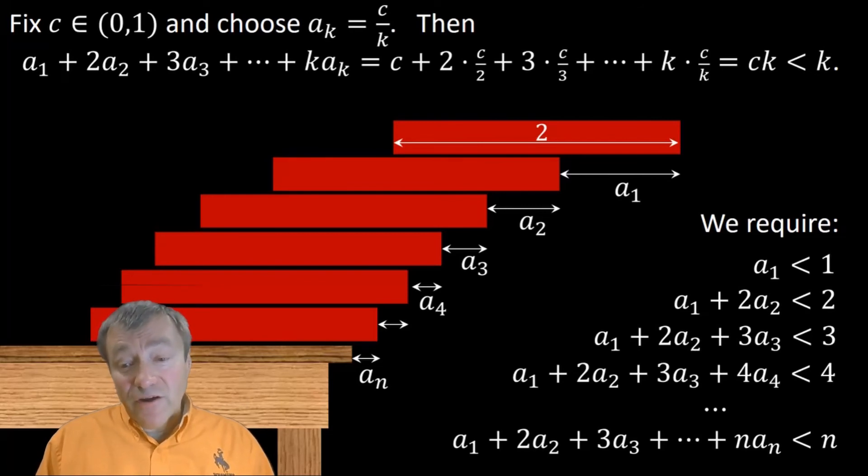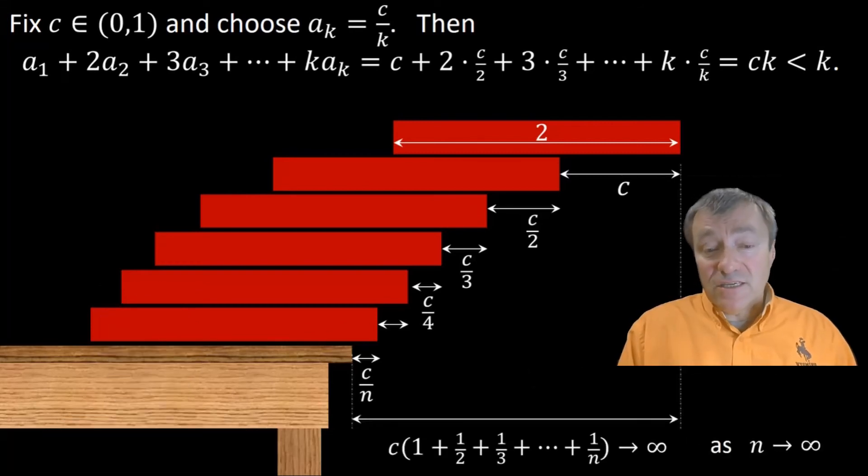Now the question is, how far, if you'd build your stack of books or VHS tapes, if you build your stack this way, how far does the stack extend beyond the edge of the table? Well, for that, the distance that you're extending is C plus C over 2 plus C over 3 plus C over N. And the common factor of C comes out. What's left inside the parentheses is the n-th partial sum of the harmonic series.